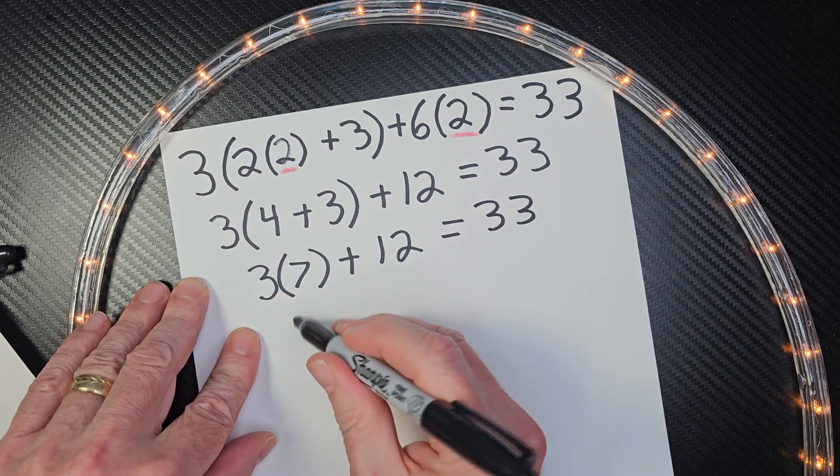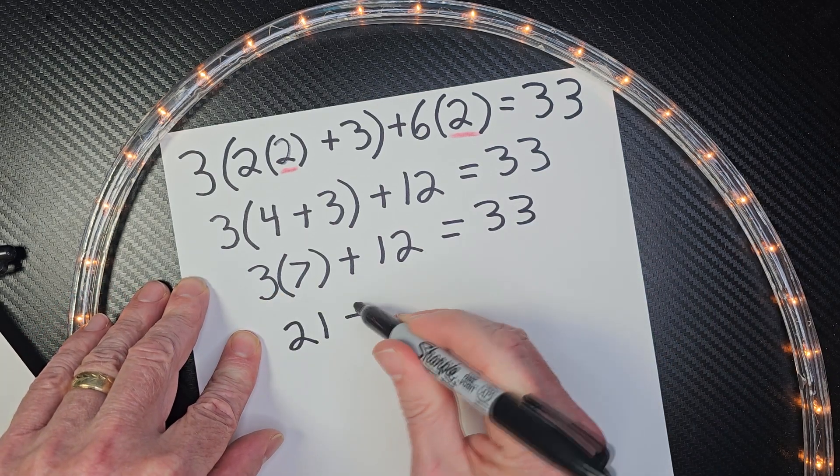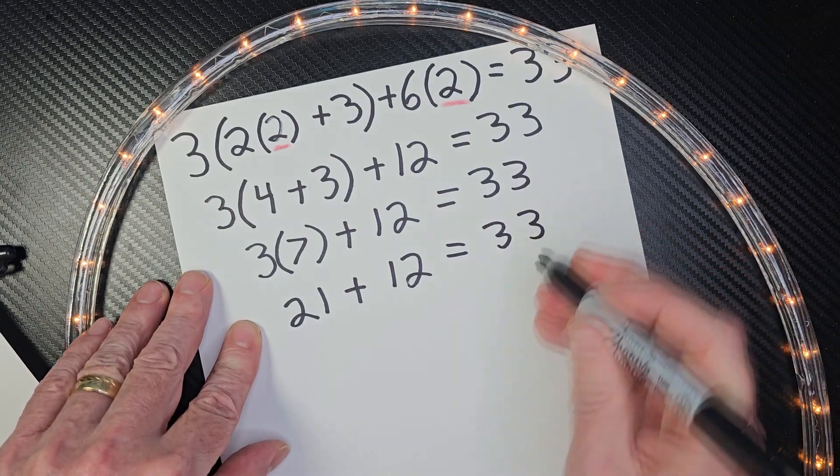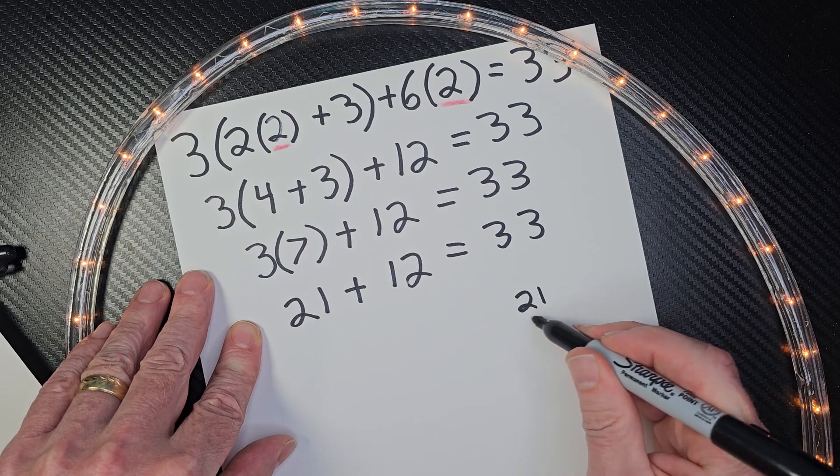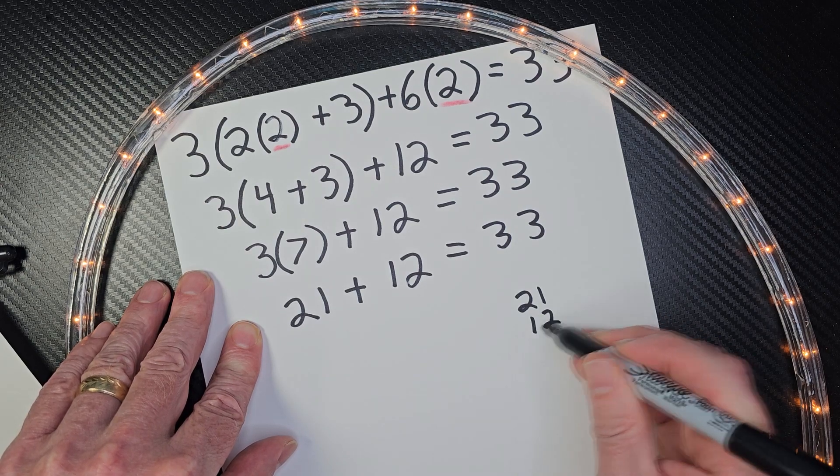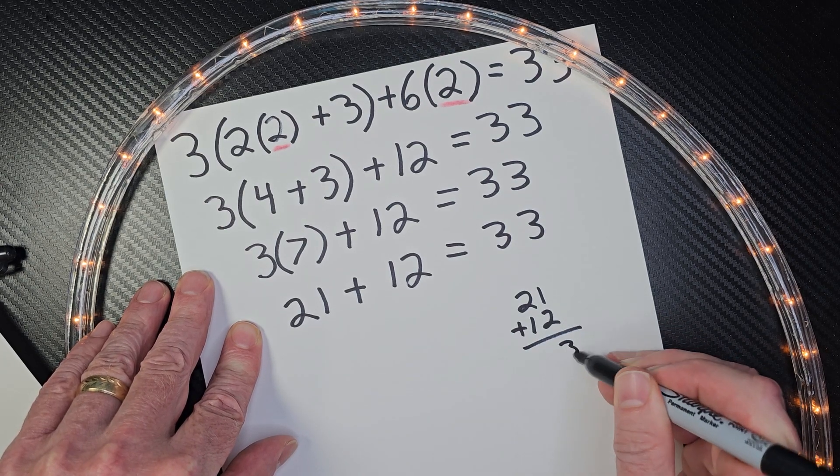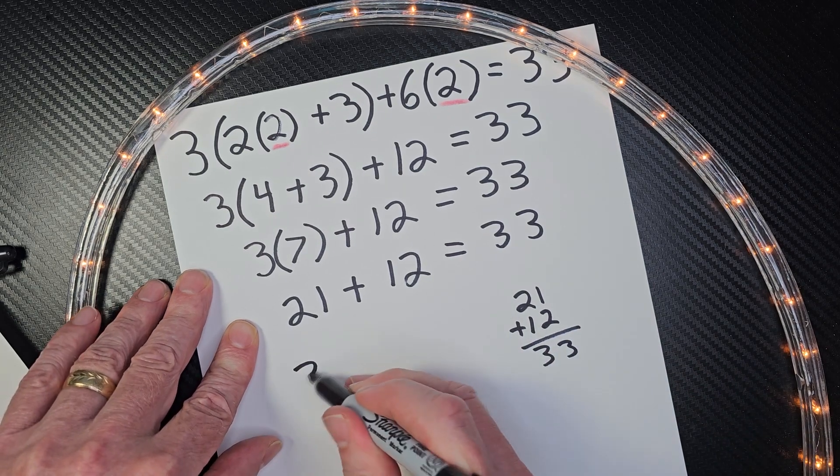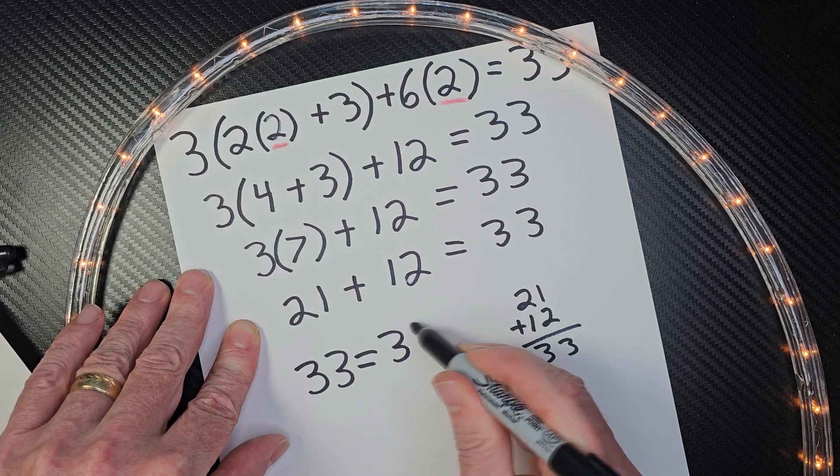And 3 times 7 is 21, plus 12 equals 33. And let's do a little figuring on this side. 21 plus 12, so we have 3, and 2 plus 1 is 3. So this is true. 33 equals 33.